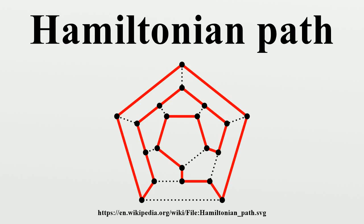Properties: Any Hamiltonian cycle can be converted to a Hamiltonian path by removing one of its edges, but a Hamiltonian path can be extended to a Hamiltonian cycle only if its endpoints are adjacent. All Hamiltonian graphs are bi-connected, but a bi-connected graph need not be Hamiltonian. An Eulerian graph G necessarily has an Euler tour, a closed walk passing through each edge of G exactly once. This tour corresponds to a Hamiltonian cycle in the line graph L, so the line graph of every Eulerian graph is Hamiltonian.